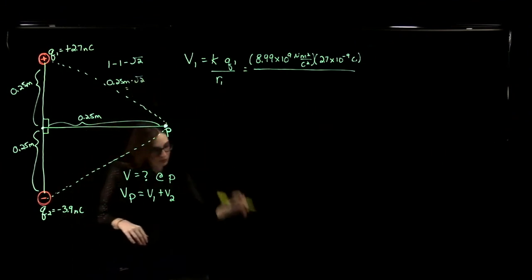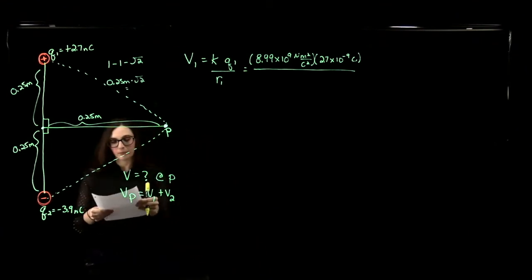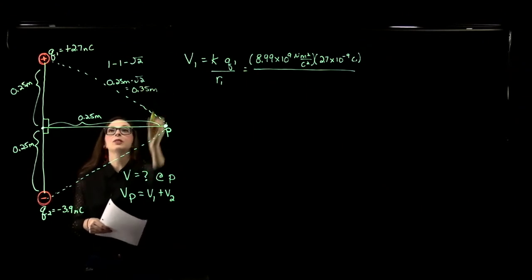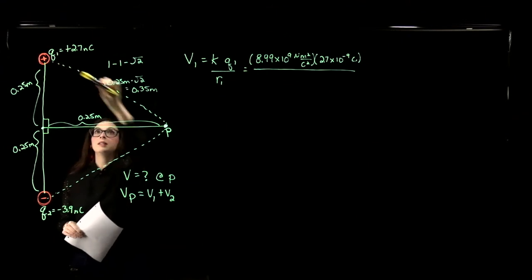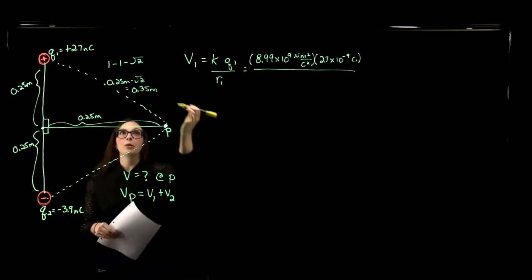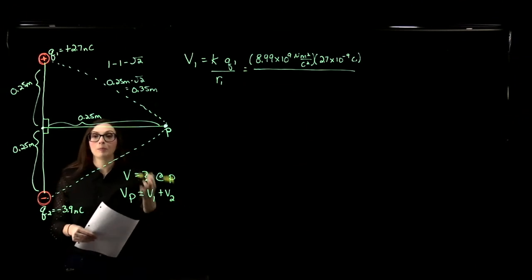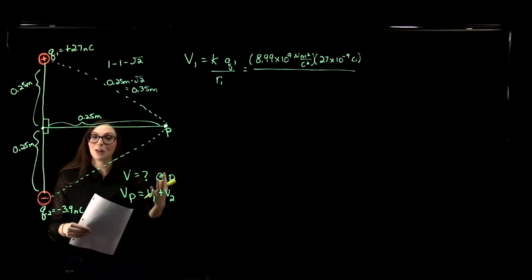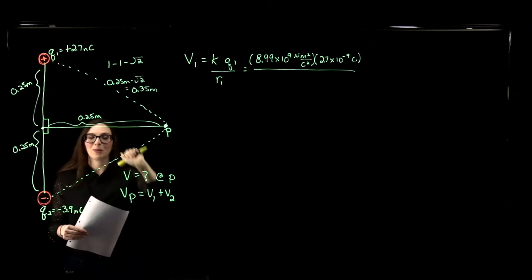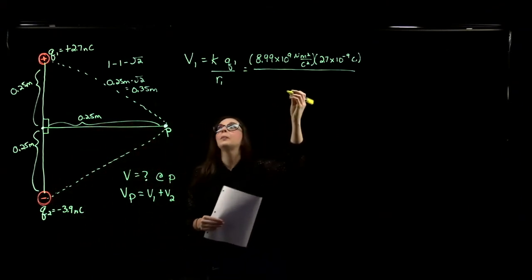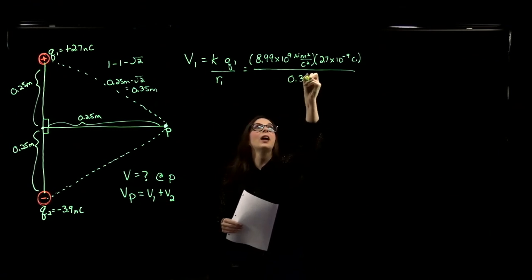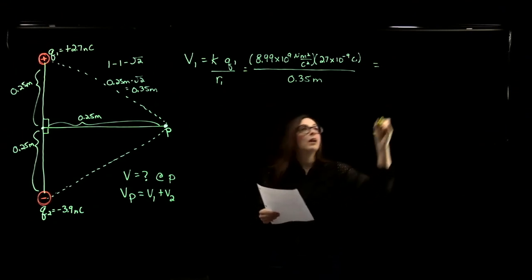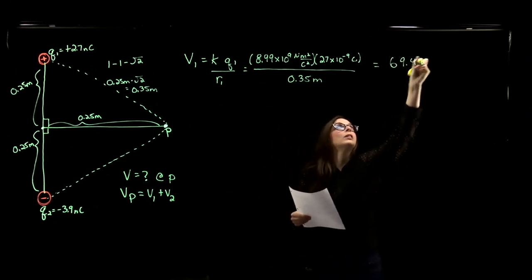That is equal to 0.35 meters. You could also prove this hypotenuse equals 0.35 meters using the Pythagorean theorem: c squared equals a squared plus b squared. So if you remember trigonometry, this is a 1-1-√2 triangle, and this distance R1 is 0.35 meters. That gives us an electric potential at point P due to charge 1 of positive 69.4 volts.